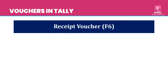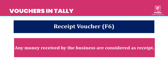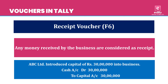The next voucher is Receipt Voucher, with shortcut key F6. Any money received by the business is considered as a receipt. Here you can pass all the receipts in cash. For example, ABC Limited introduced capital of Rs. 30 lakh into the business. The business receives the money of 30 lakh in the form of capital, so the journal entry is: cash account debit 30 lakh to capital account 30 lakh.